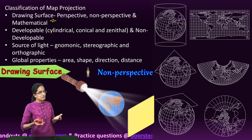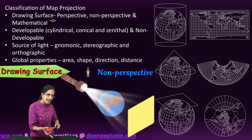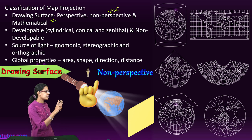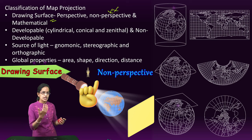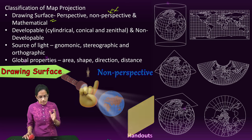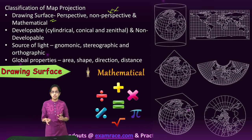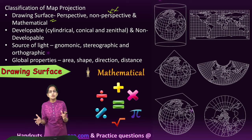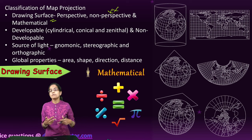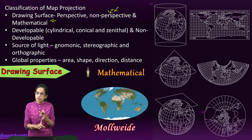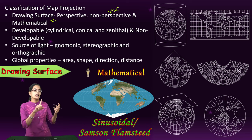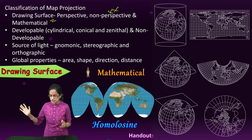Perspective implies focusing a light source on the object — a torch glowing on the earth forms an imprint on the drawing surface, giving a perspective projection. Non-perspective projection requires no light source, so there is no casting of light on the globe. Mathematical or conventional projections were some of the most ancient kinds, based on mathematical calculations. Good examples are the Mollweide projection, sinusoidal projection (also known as Sanson-Flamsteed), and homolecene projections.